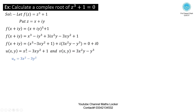Taking partial derivatives: u_x = 3x² − 3y², v_x = 6xy, u_y = −6xy, v_y = 3x² − 3y². The partial derivative of u with respect to x is 3x² − 3y², and with respect to y is −6xy. The partial derivative of v with respect to x is 6xy, and v_y = 3x² − 3y².